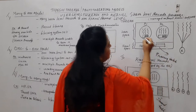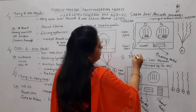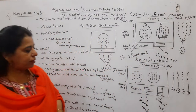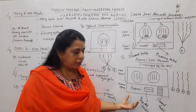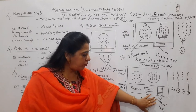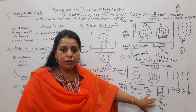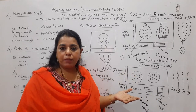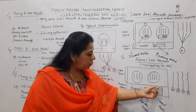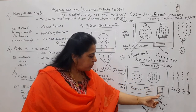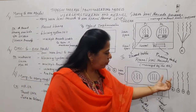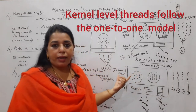There is also a thread table and a process table maintained in the kernel space. In kernel-level threads, the kernel is fully aware of user-level threads as well — it maintains a complete thread table. Whenever a process has multiple threads, a separate thread table entry exists for all those threads, as shown in the diagram.